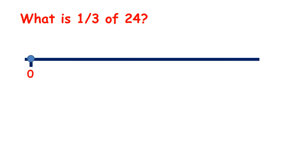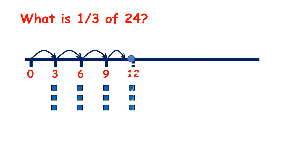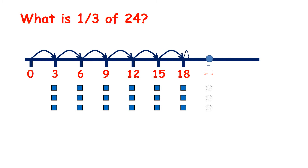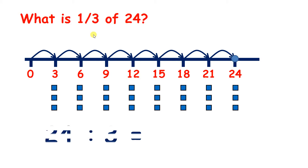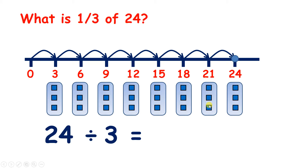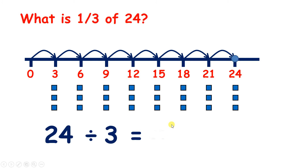So we can count in steps of 3 until we get to 24. 3, 6, 9, 12, 15, 18, 21, 24. So we have 24 divided by 3, and we've made 1, 2, 3, 4, 5, 6, 7, 8 groups. So our answer is 8.